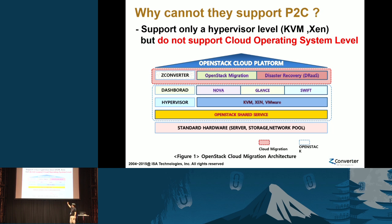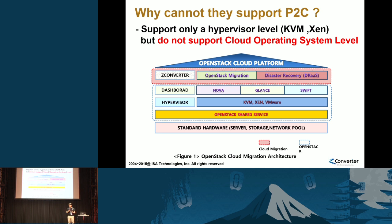This is the OpenStack architecture. OpenStack is a cloud platform, or a cloud operating system. Even though there is no kernel, everything runs like a cloud operating system. The hypervisor level is also one of the operating systems — they have their own kernel. P2V migration technology supports the hypervisor level. However, when you look at this OpenStack cloud operating system, hypervisors like VMware, KVM, and Xen are just OpenStack components.